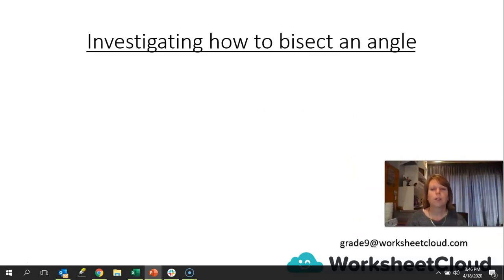First thing is we're going to be investigating how to bisect an angle. So the first thing is to understand what bisect actually means and that means to cut it in half. And there's a specific way that we can do this without using a protractor. So we're going to be using our compass.